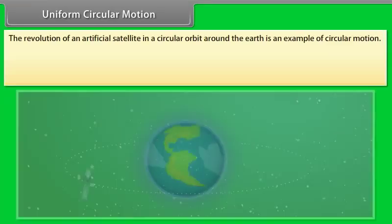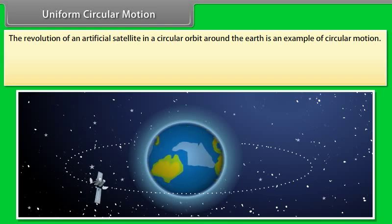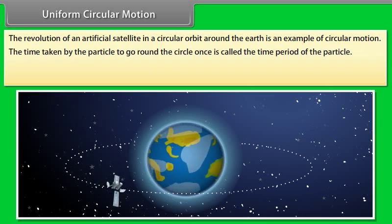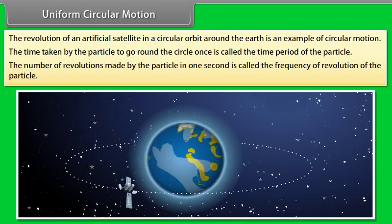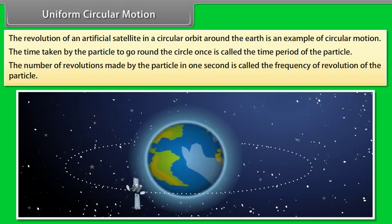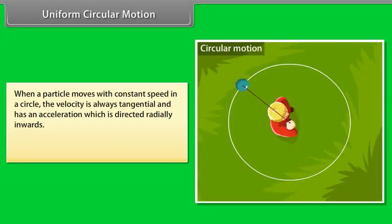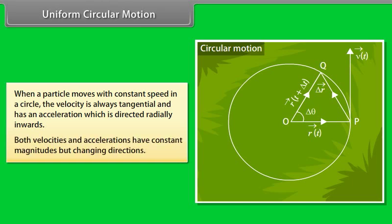Uniform circular motion: the revolution of an artificial satellite in a circular orbit around the earth is an example of circular motion. The time taken by the particle to go round the circle once is called the time period. The number of revolutions per second is the frequency of revolution. When a particle moves with constant speed in a circle, the velocity is always tangential and the acceleration is directed radially inwards. Both velocity and acceleration have constant magnitudes but changing directions.